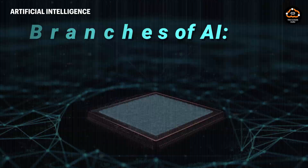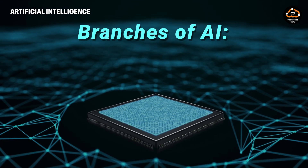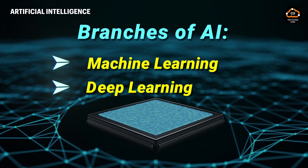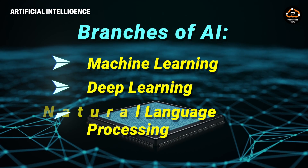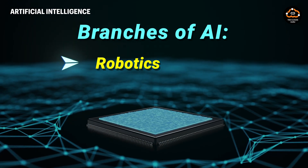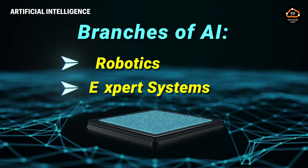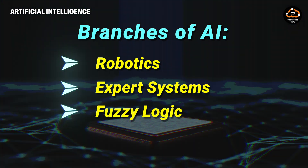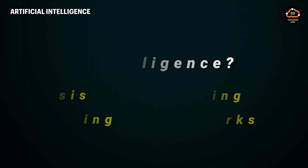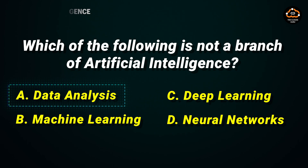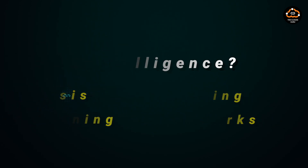Branches of AI include machine learning, deep learning, natural language processing, robotics, expert systems, and fuzzy logic. So the answer to our first question is data analysis, which is not a branch of AI.